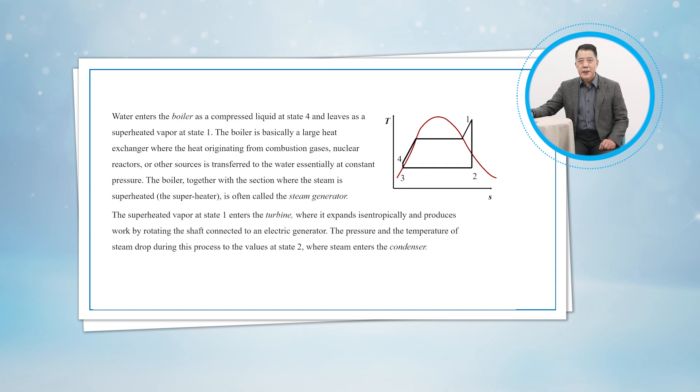The superheated vapor at state 1 enters the turbine, where it expands isentropically and produces work by rotating the shaft connected to an electric generator. The pressure and the temperature of steam drop during this process to the values at state 2, where steam enters the condenser.